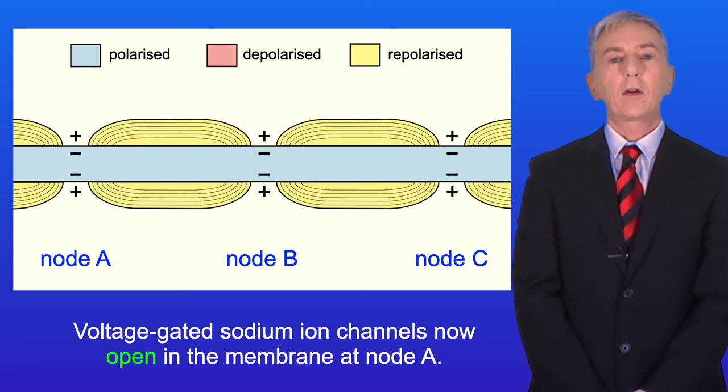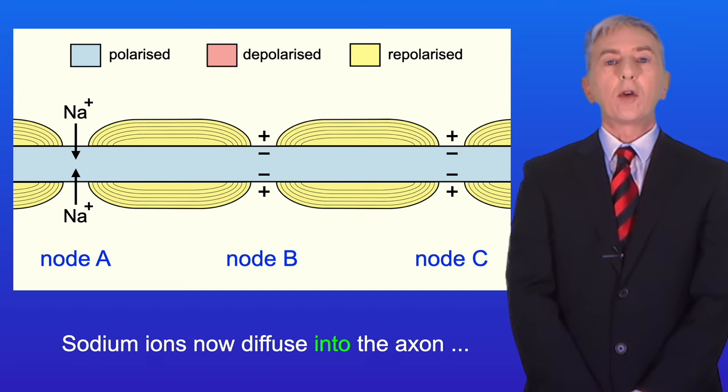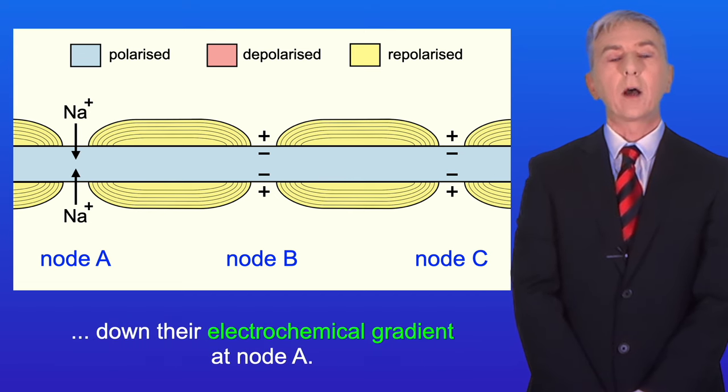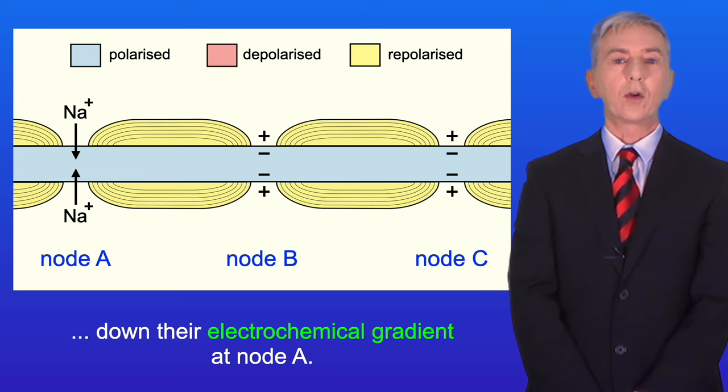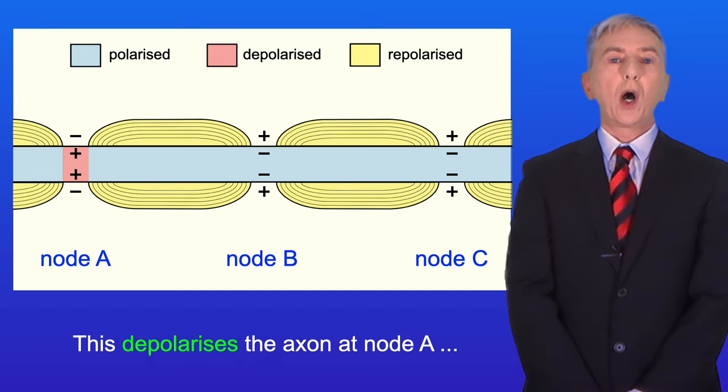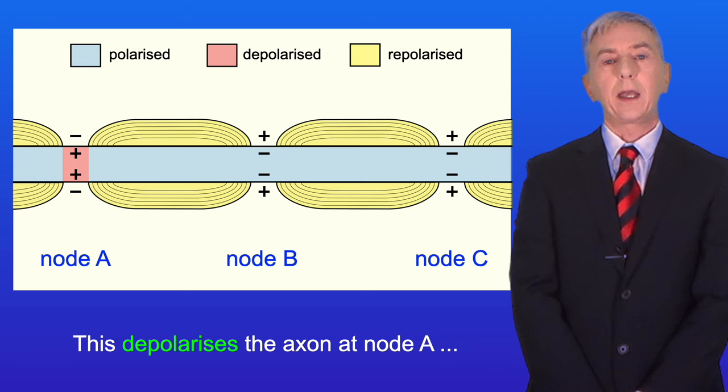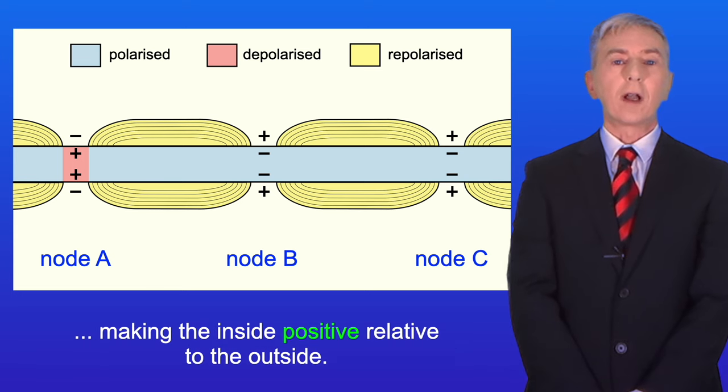Voltage-gated sodium ion channels now open in the membrane at node A. Sodium ions now diffuse into the axon down their electrochemical gradient at node A. This depolarizes the axon at node A, making the inside positive relative to the outside.